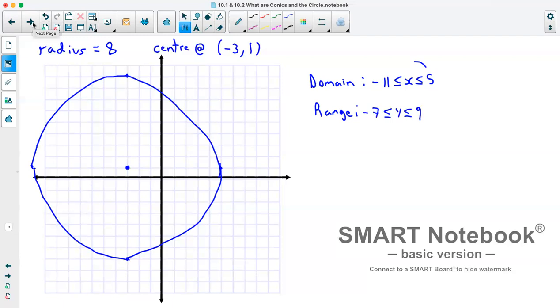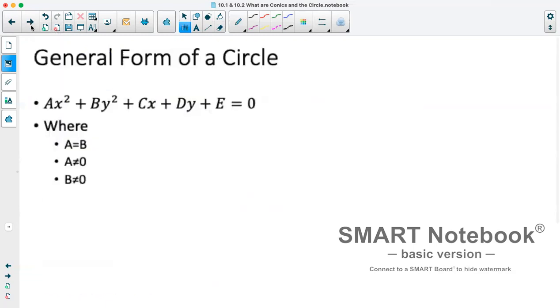Now we have another form of this equation which isn't necessarily as useful for graphing, which is our general form of a circle. So it takes the form of ax squared plus by squared plus cx plus dy plus e equals 0. Now this has some restrictions which will be important to pay attention to because we'll have some similar formulas where essentially we have the same formula but different restrictions for different shapes of graphs.